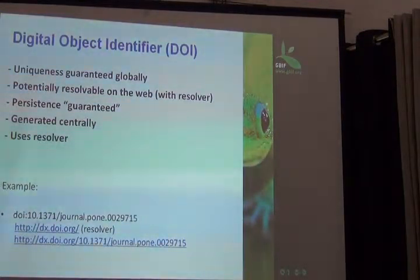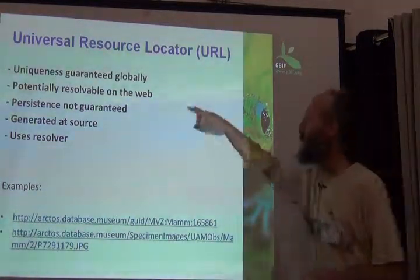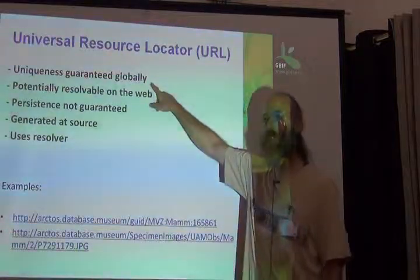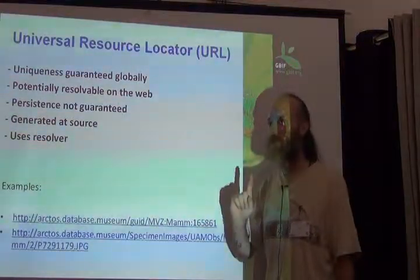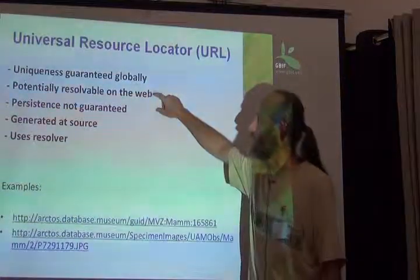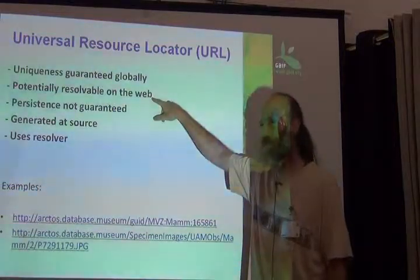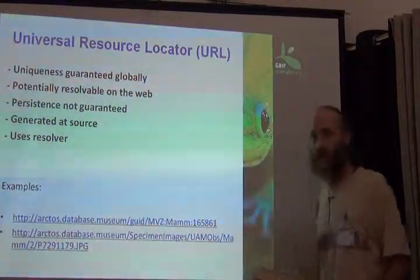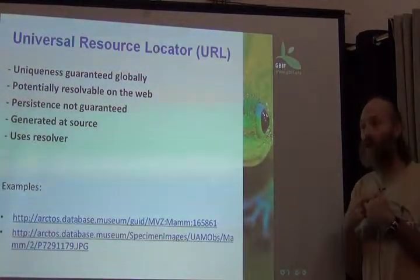We could also use DOIs for specimens — there's no reason they have to be only for journal articles. Then we come to URLs, which we all know. Their uniqueness is guaranteed globally: a URL goes to only one place by definition and cannot conflict. They are potentially resolvable on the web — though only potentially, because you can create one and host it on your own web server at your own university.